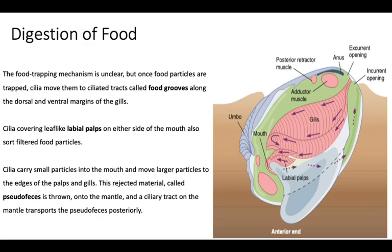For digestion, the entry route for food particles is also facilitated by the same in-current opening at the posterior margin of the bivalve. This is the anterior margin, this is the dorsal surface, and this is the posterior surface. To quickly summarize orientation: the anterior margin is towards the mouth, and the posterior margin contains the anus.